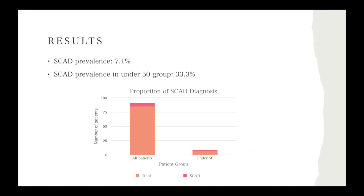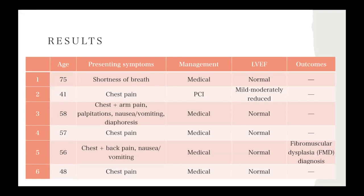Our study showed an overall SCAD prevalence of 7.1 percent, and specifically in patients aged under 50, two of the six patients were diagnosed with SCAD — a prevalence of 33.3 percent in that subgroup. The six SCAD patients presented with a variety of symptoms. In terms of management, five were medically managed and one underwent PCI. Left ventricular ejection fraction was largely normal aside from one patient with mild to moderately reduced function. There were no deaths, no SCAD recurrence, and one patient was subsequently diagnosed with fibromuscular dysplasia.